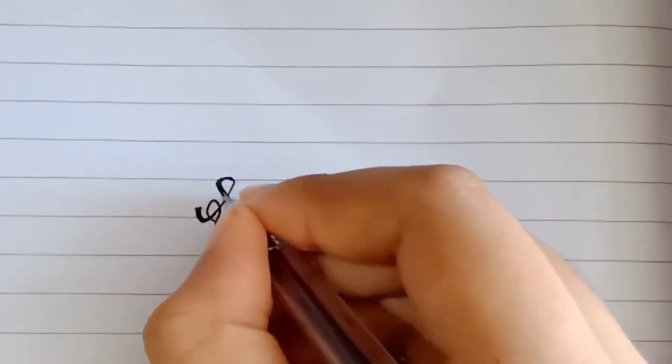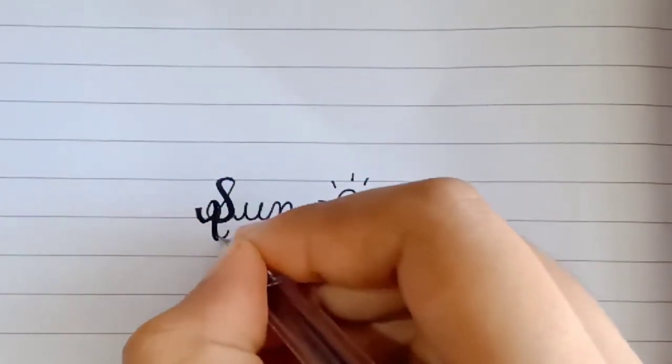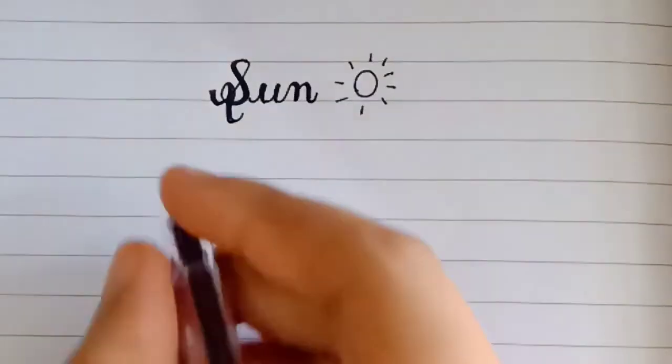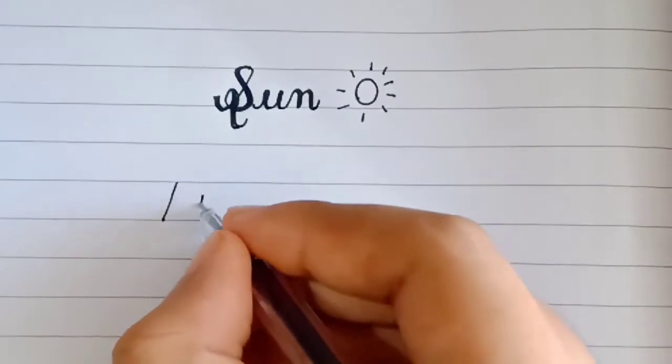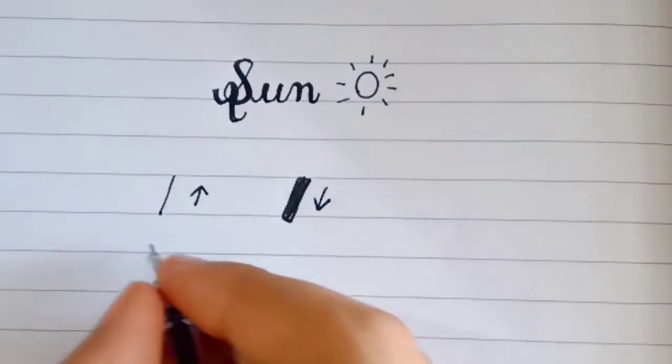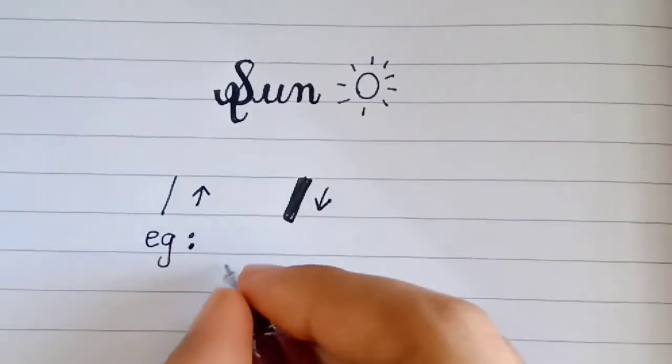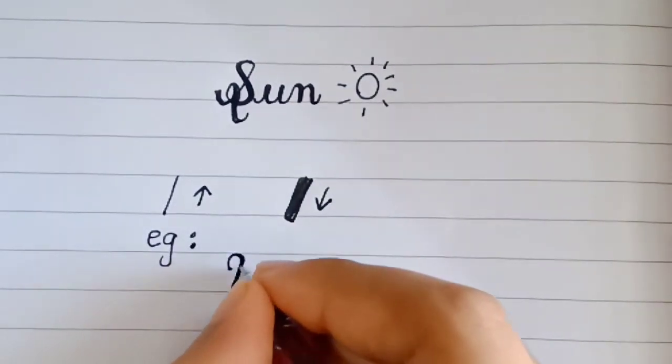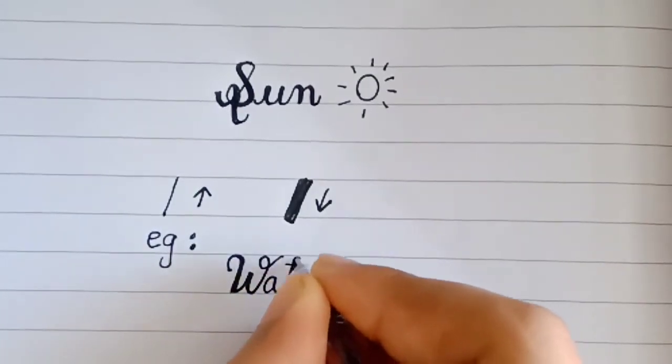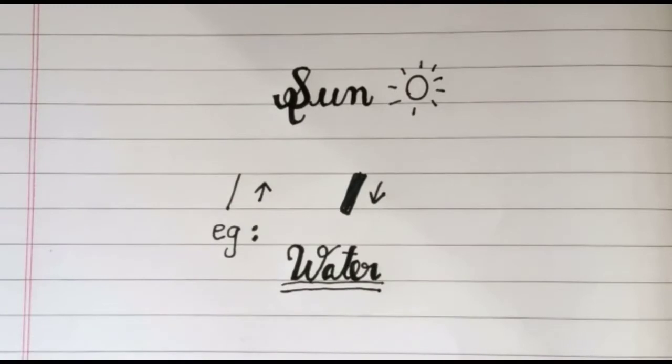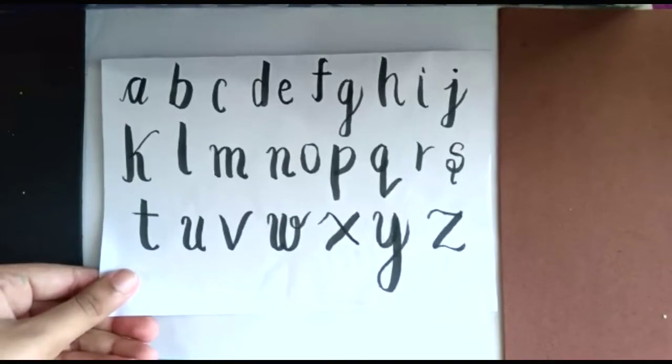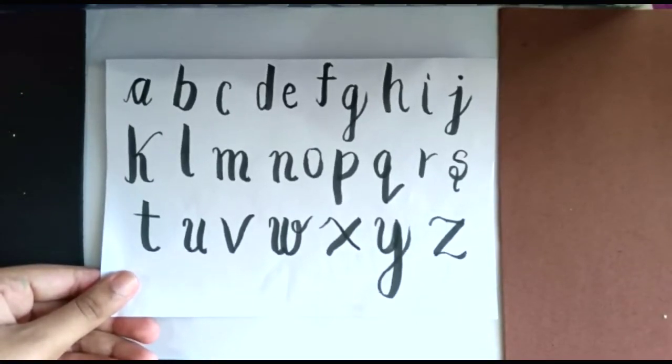As you can see, I am making the lines thick in some parts which make it look good. So in which part we have to do this? For the lines which go up, it has to be thin and the lines coming down has to be thick. You can use this in your headings, greeting cards, etc. Here are some lettering ideas for you guys.